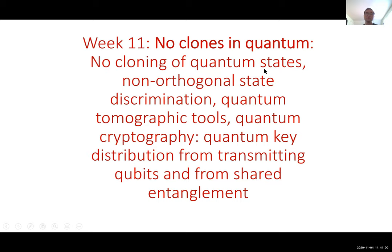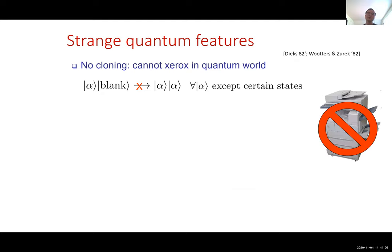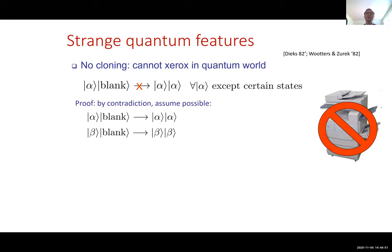The statement of no-cloning is easy to understand. If you have a pure state |α⟩ and some blank state, you want to make a copy: |α⟩ into an additional copy |α⟩. It turns out this is not possible — it was shown a long time ago by Wootters and Zurek — except for certain states. For example, if states are classical computational basis states, you can make copies. We're going to see a simple proof by contradiction.